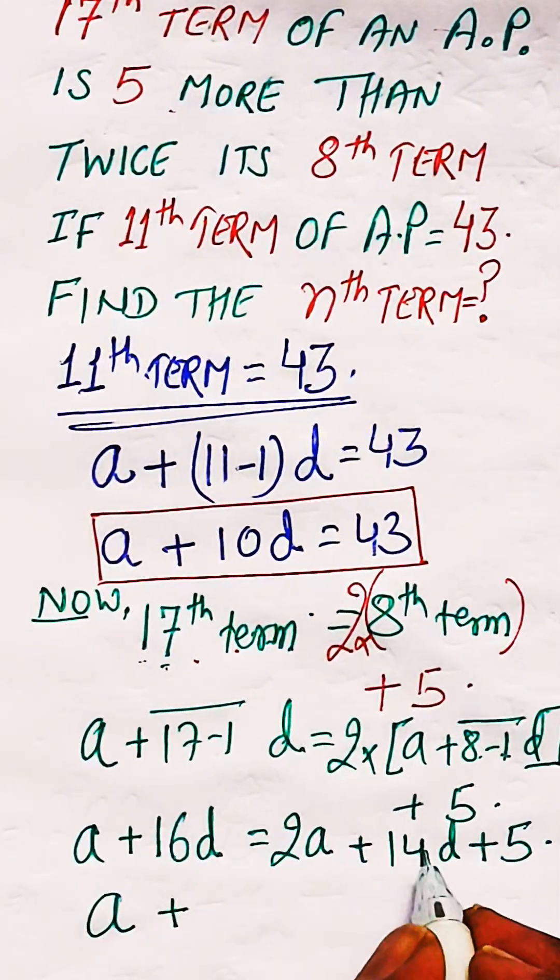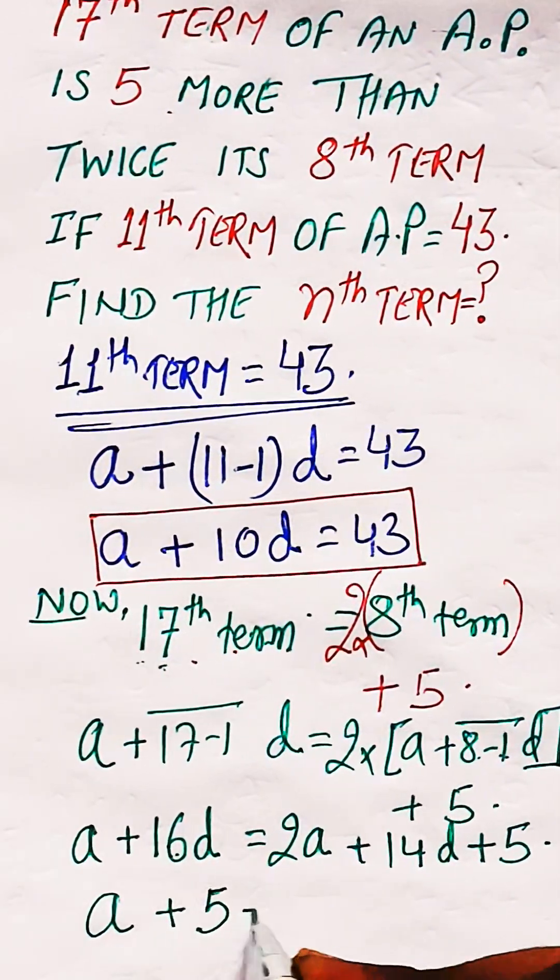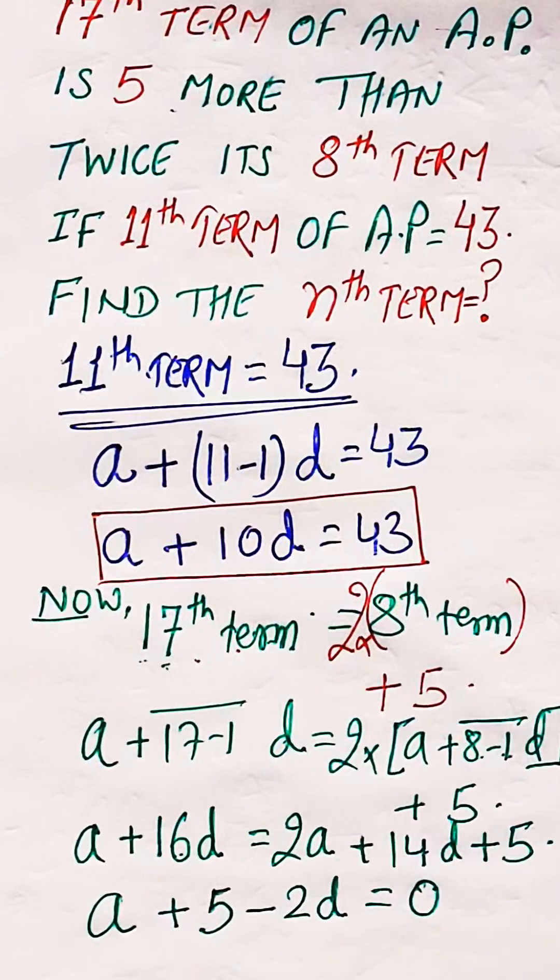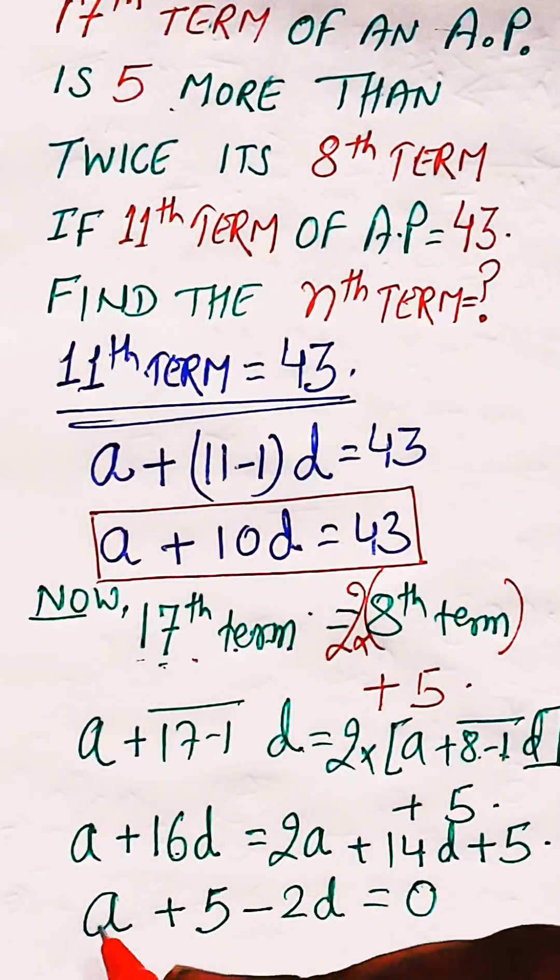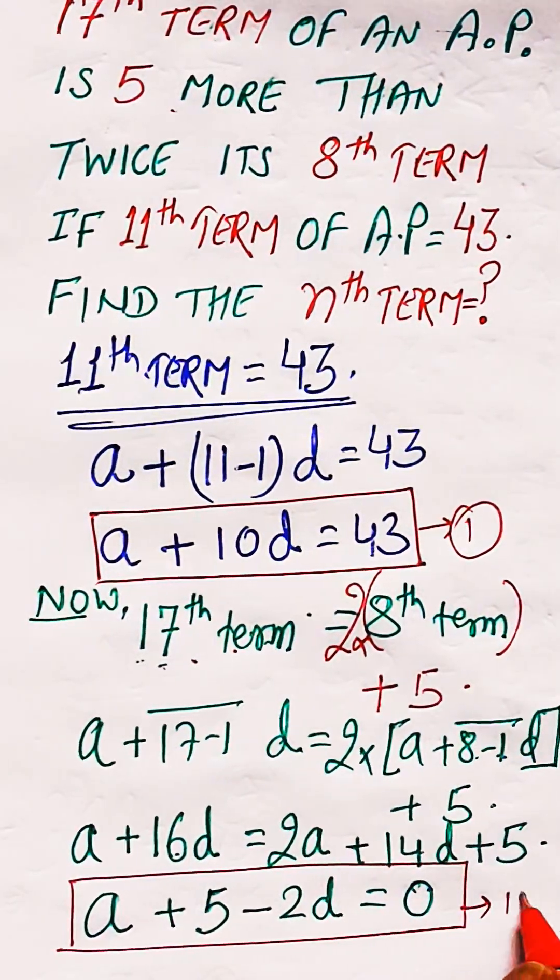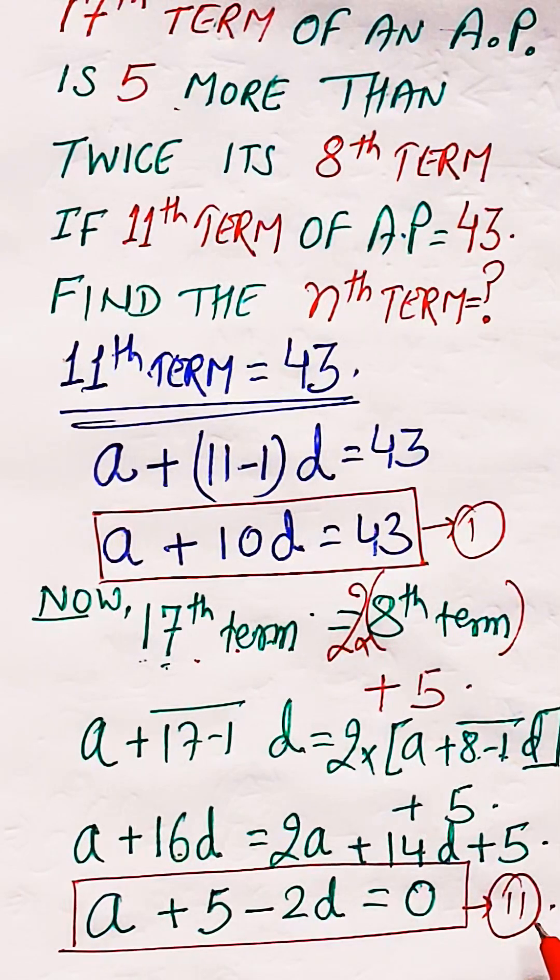This gives you A plus 5 minus 2D equals 0. This is the other relation which is derived. So if this is equation 1 and this is equation 2, we can add both these equations or subtract to eliminate A.